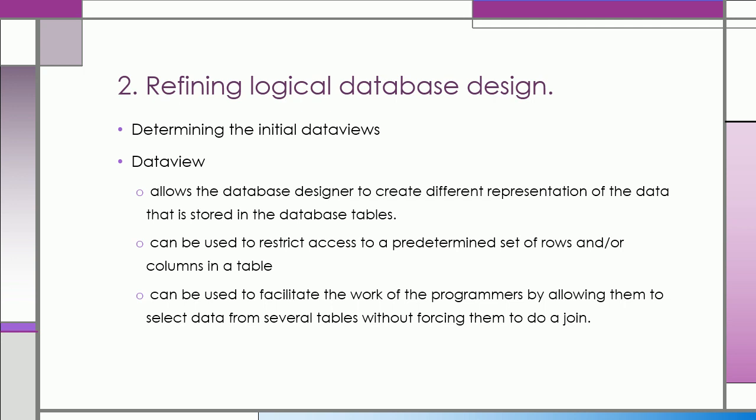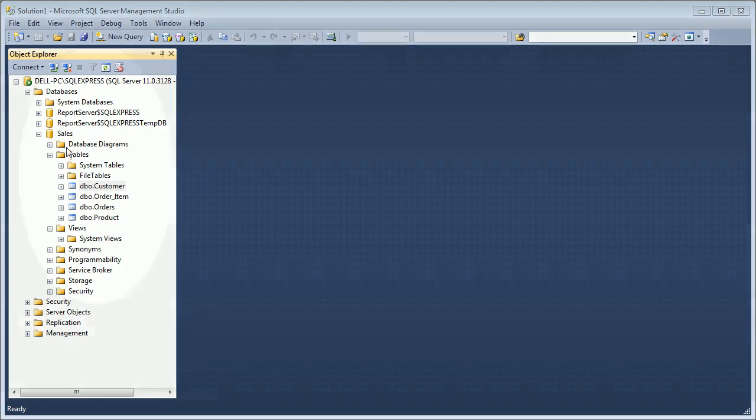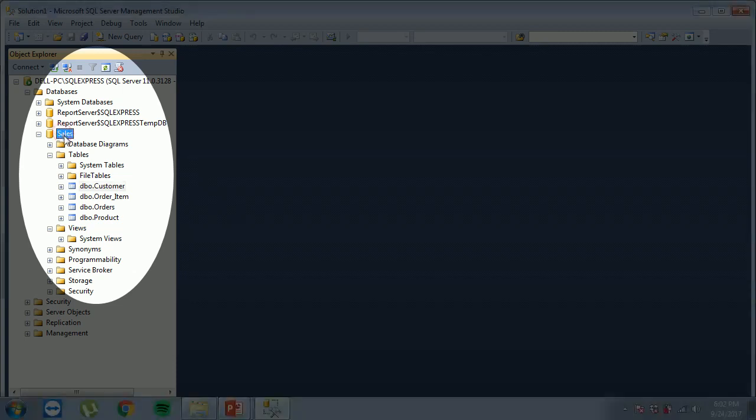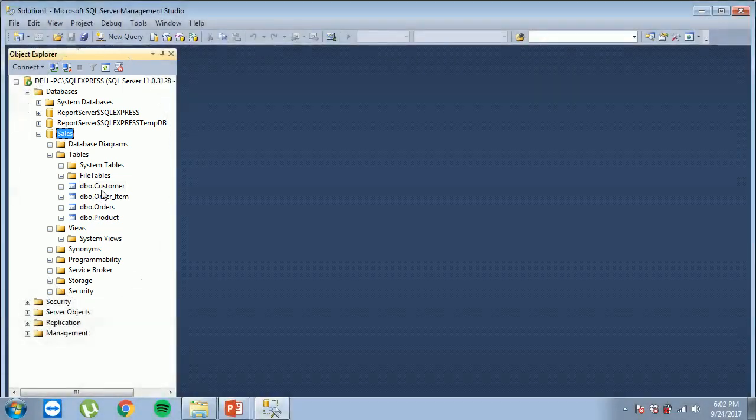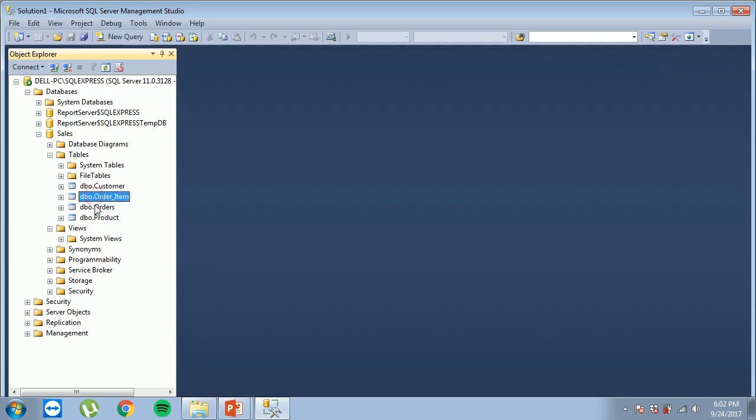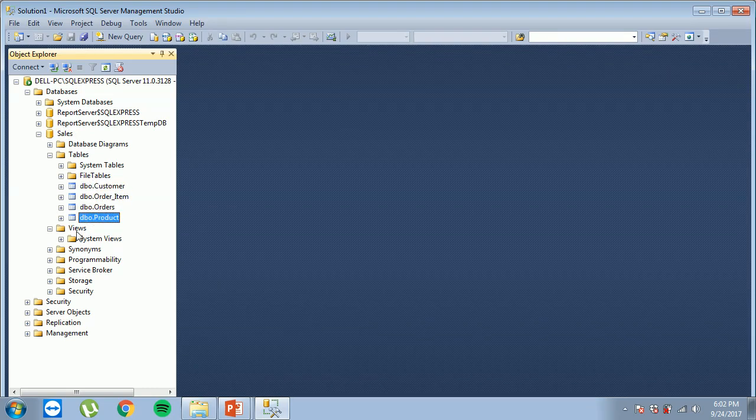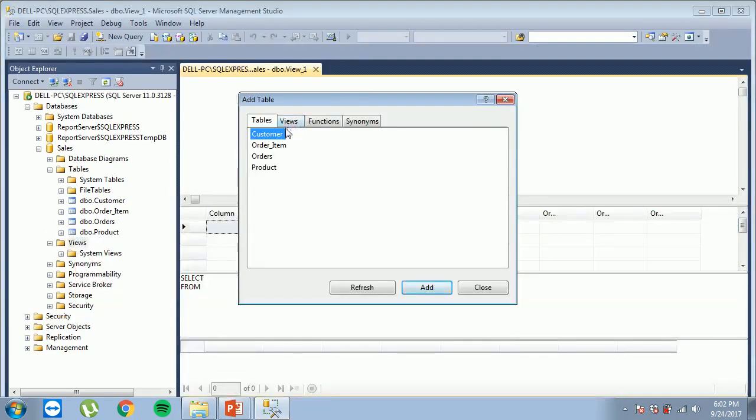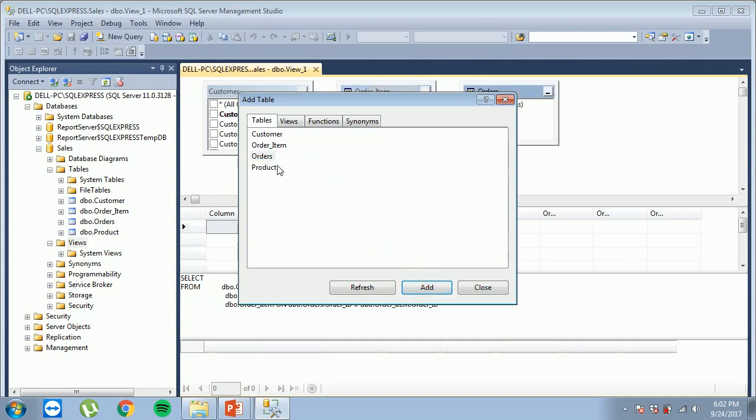As an example, I will show you how to create a data view in an MS SQL server. In our SQL server, we have the sales database. In this database, we have customer table, order item, orders, and product table. Now, I would like to create a data view for all the customers together with all the details of their ordered products. And then we select all the columns that should be displayed in the sales data view.